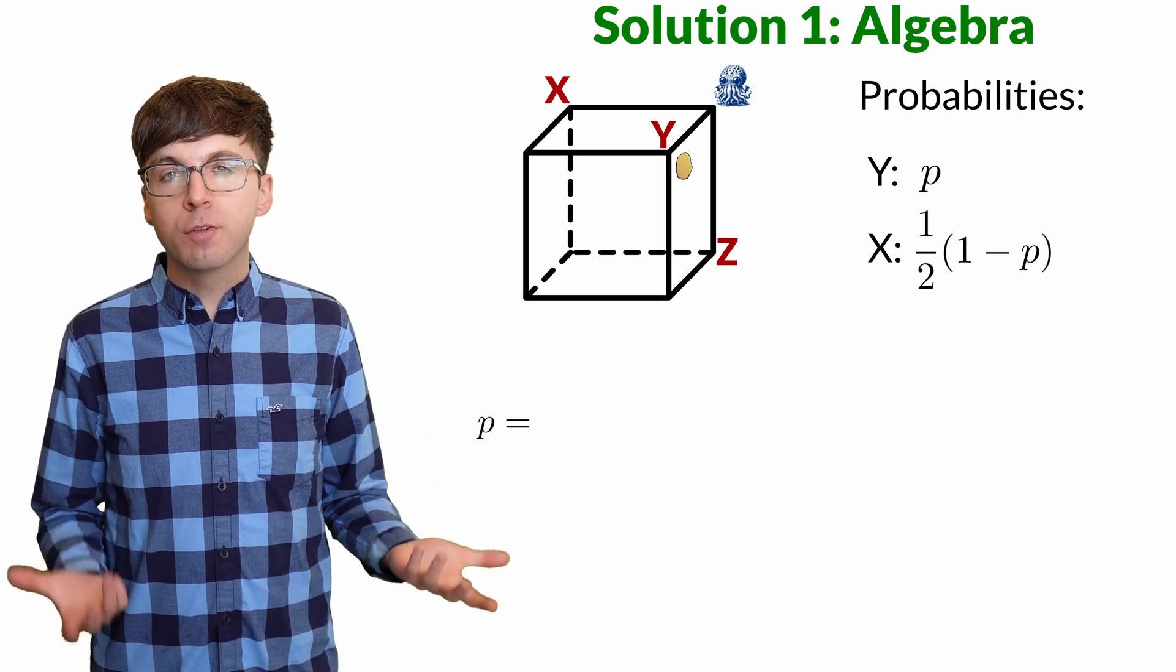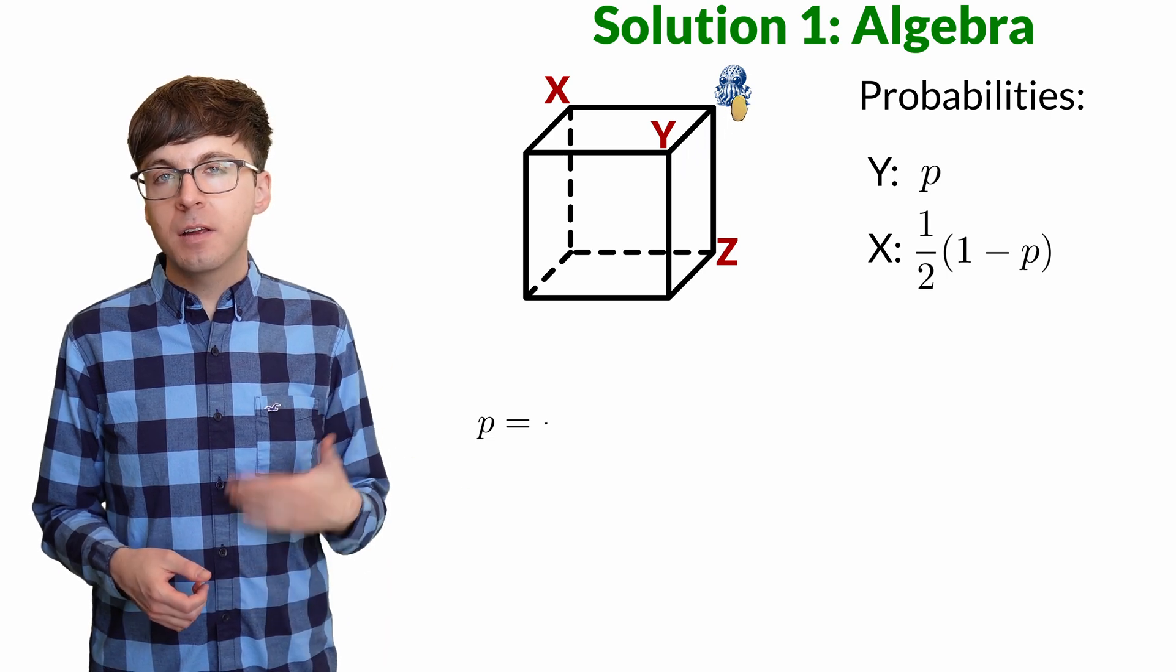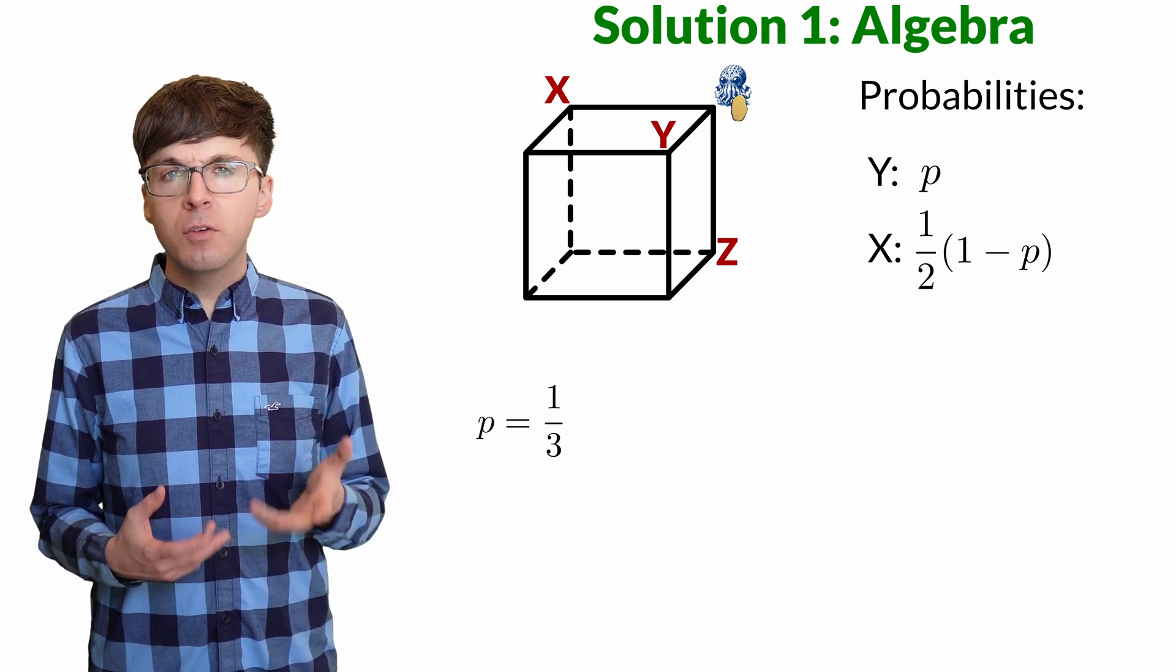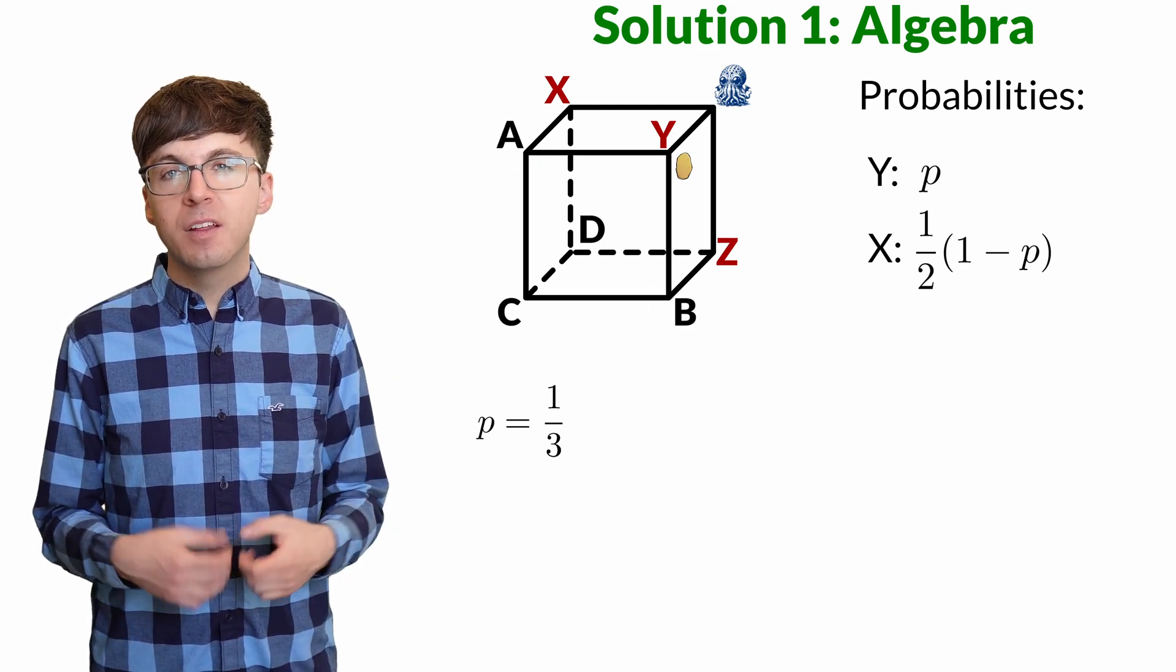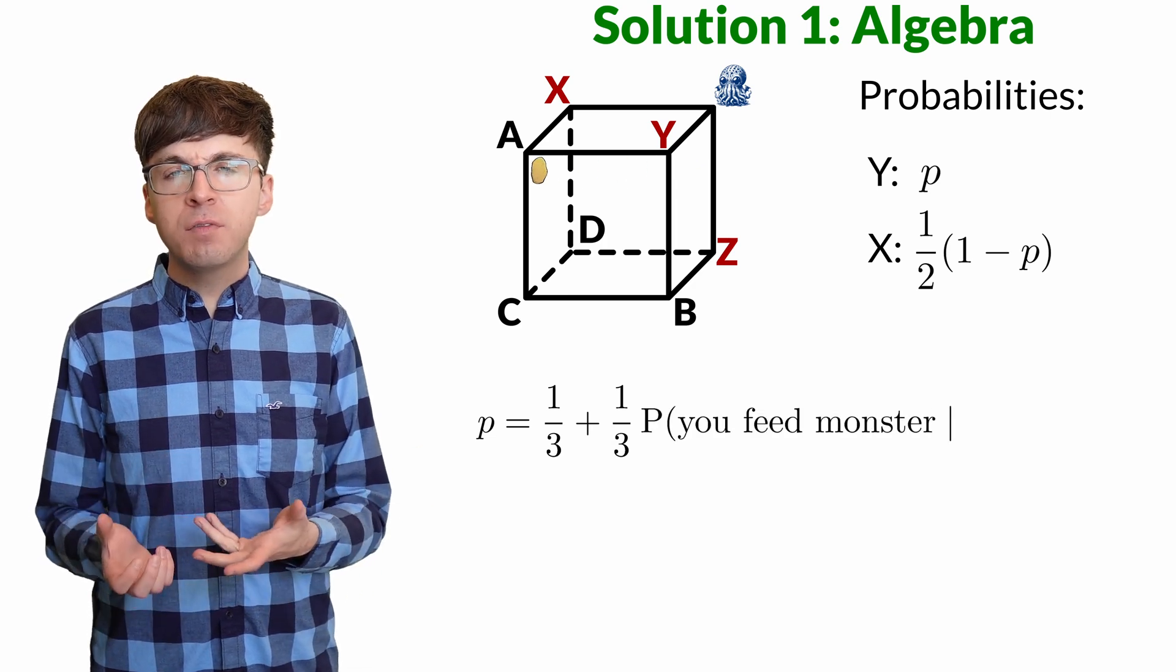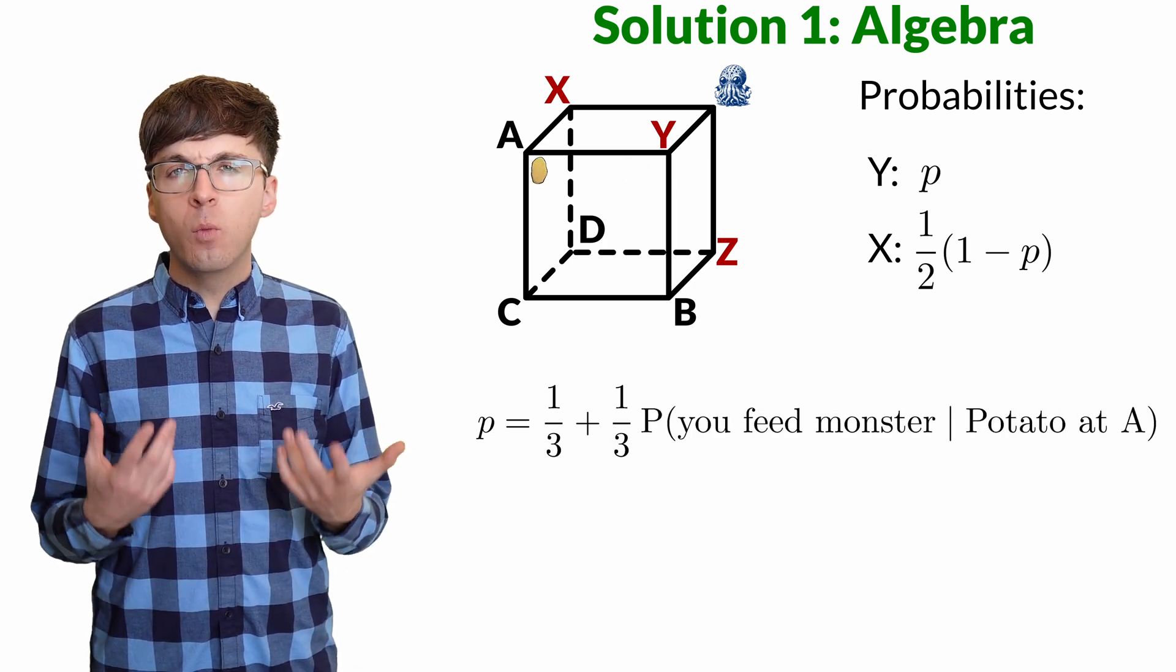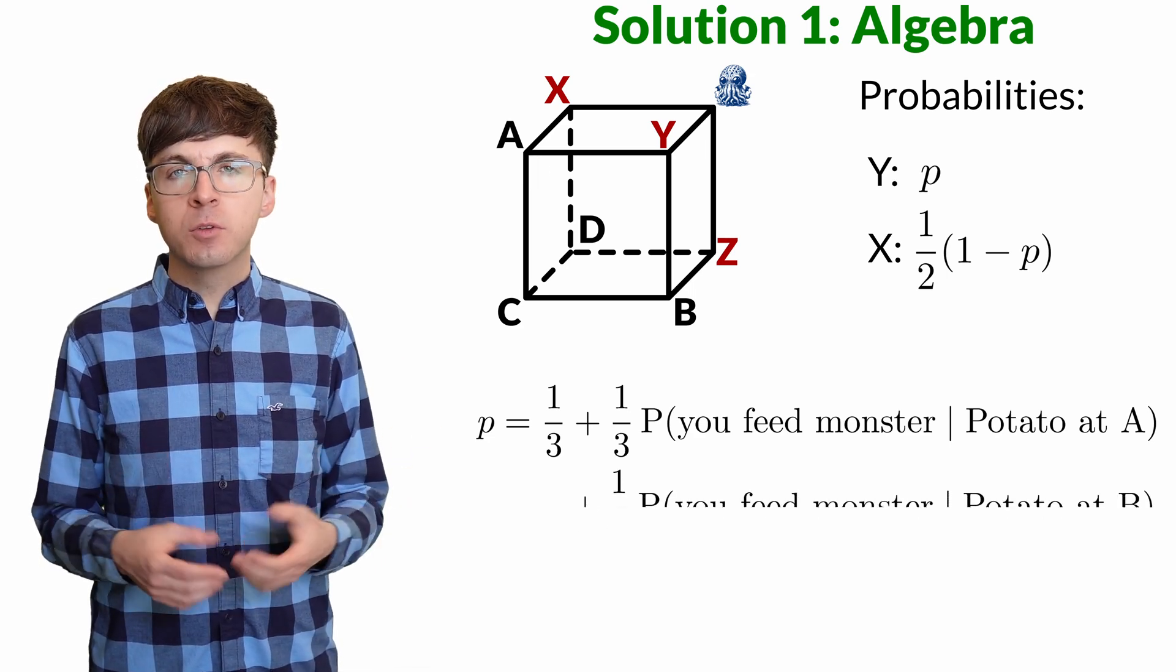Now let's write an equation for p. We might throw the potato directly to the monster. That has probability one-third. Otherwise, we'll throw it to one of these two vertices. Let's call these a and b. There's a one-third probability we throw the potato to a, and then we have to find the conditional probability that we feed the monster given that the potato is at a. And there's a similar term for b.